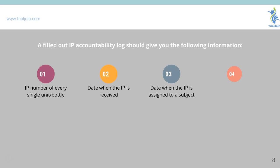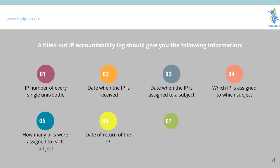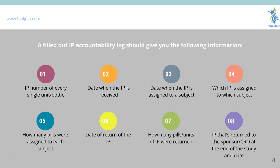Filling out an accountability log should capture the following information: the number of every single unit or bottle, the date when the investigational product was received, the date when the product was assigned to a subject, which investigational product was given to which subject, how many pills were assigned to each subject, the date of return of the investigational product, how many pills or units were returned, and the investigational product returned to the sponsor and CRO at the end of the study and the date. Remember, this is proprietary sponsor information, so everything must be well organized and well tracked.